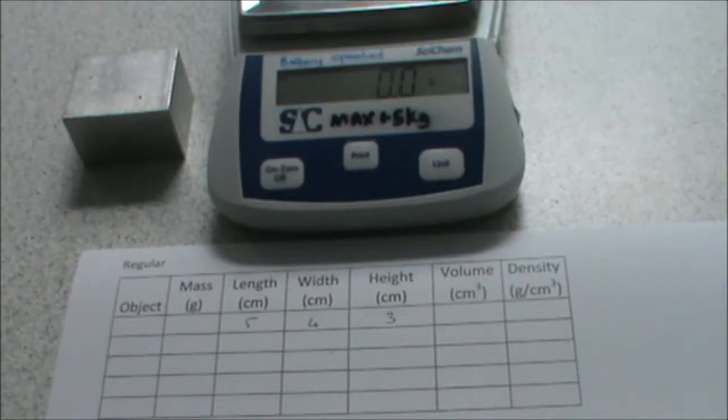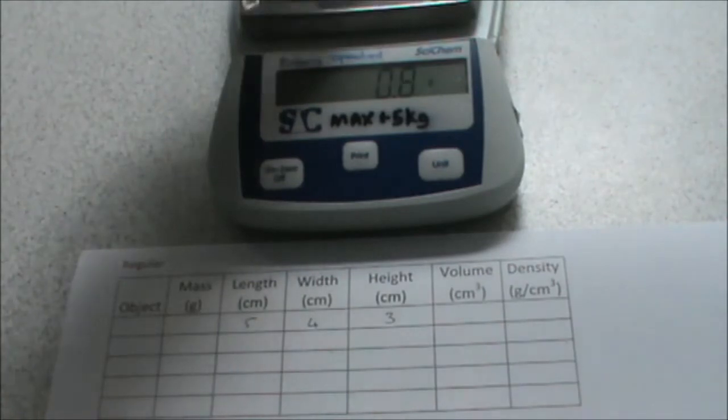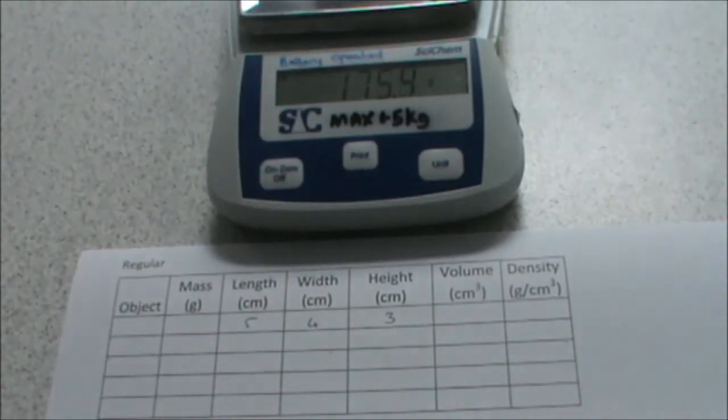We're now going to measure the mass of our object. We place our object onto the top pan balance, making sure that it was zeroed beforehand. Otherwise, we would end up with a zero error. Our mass is 175.3 grams.